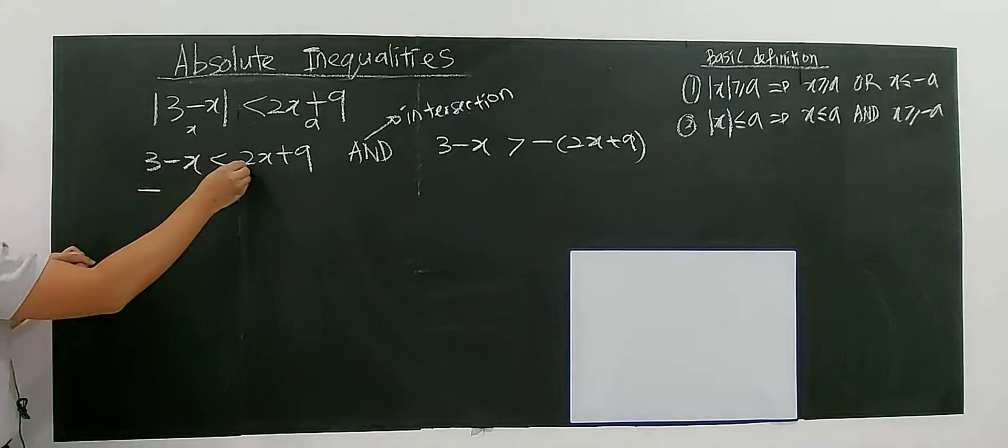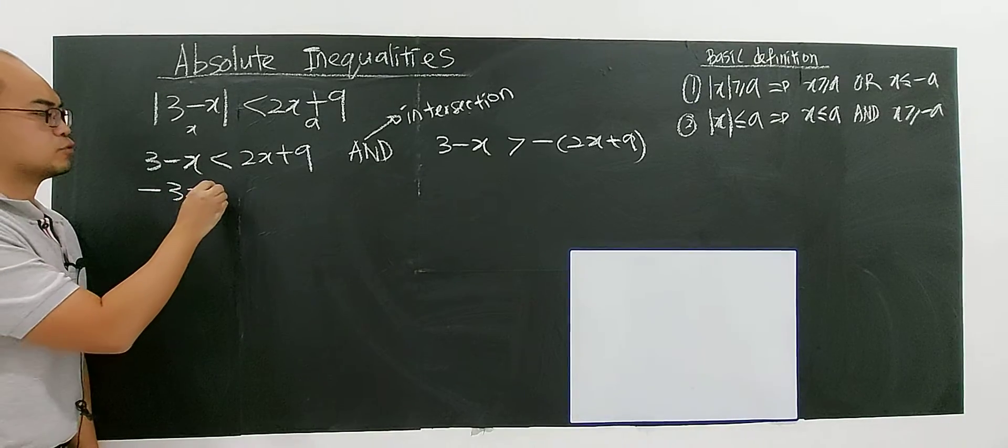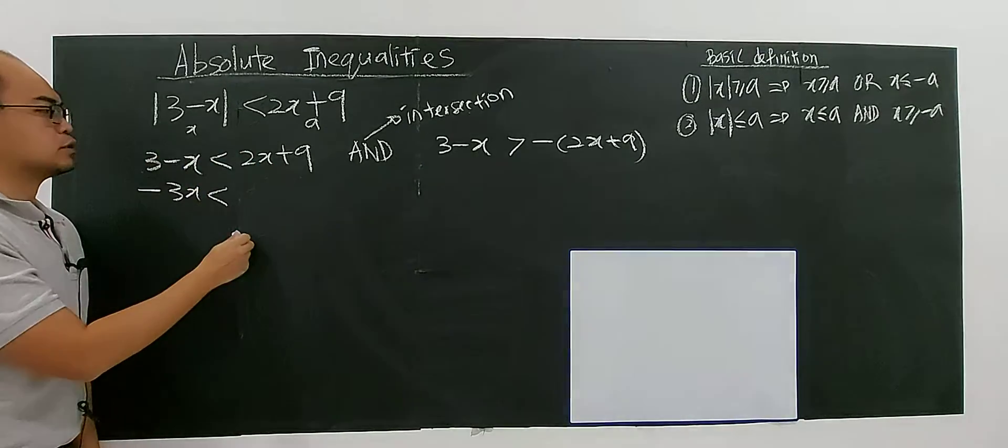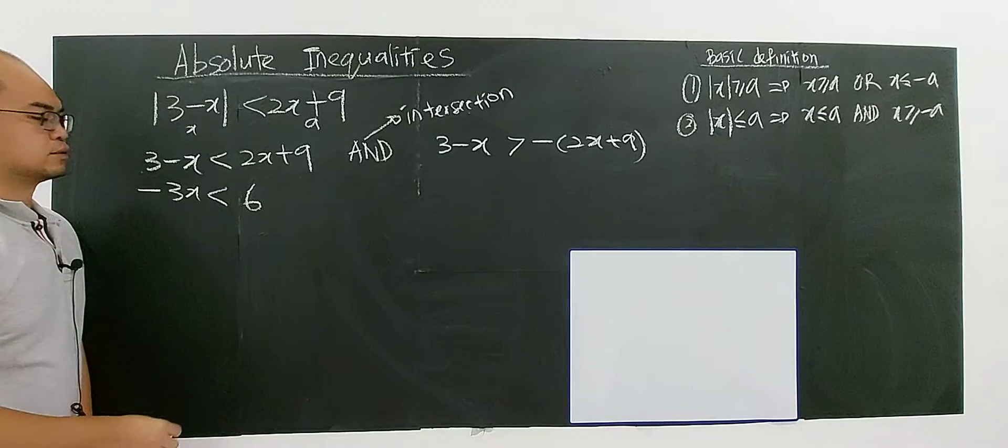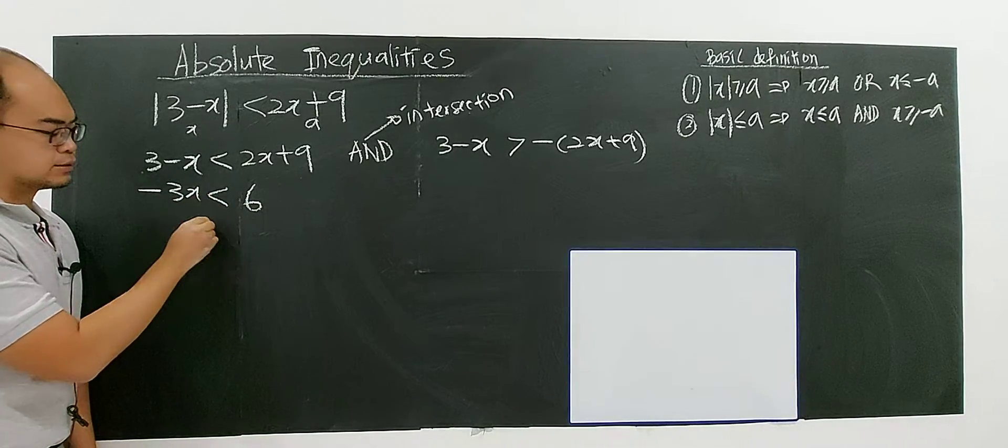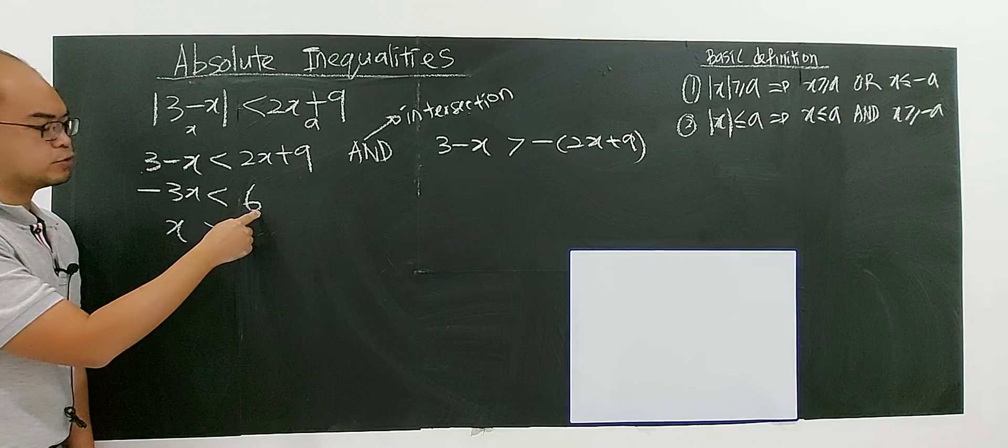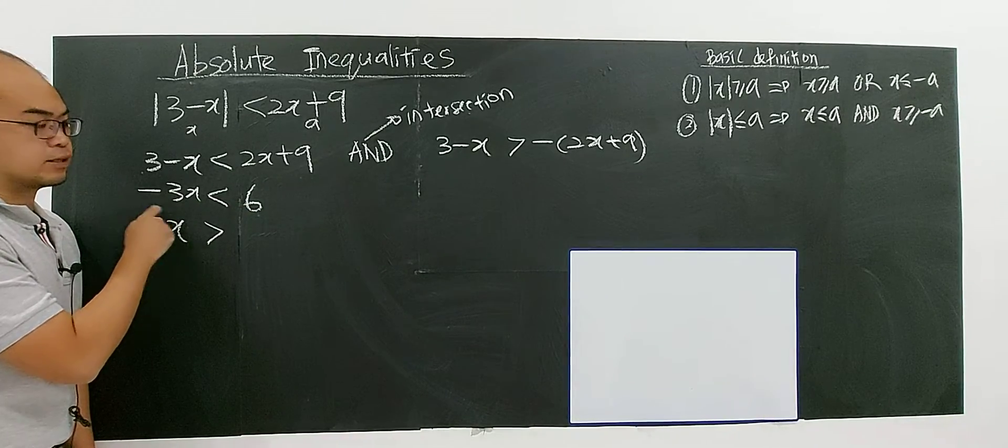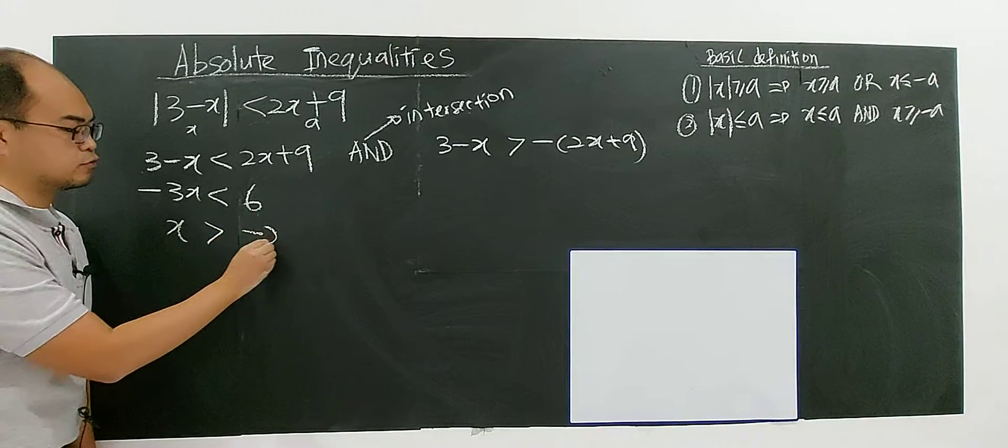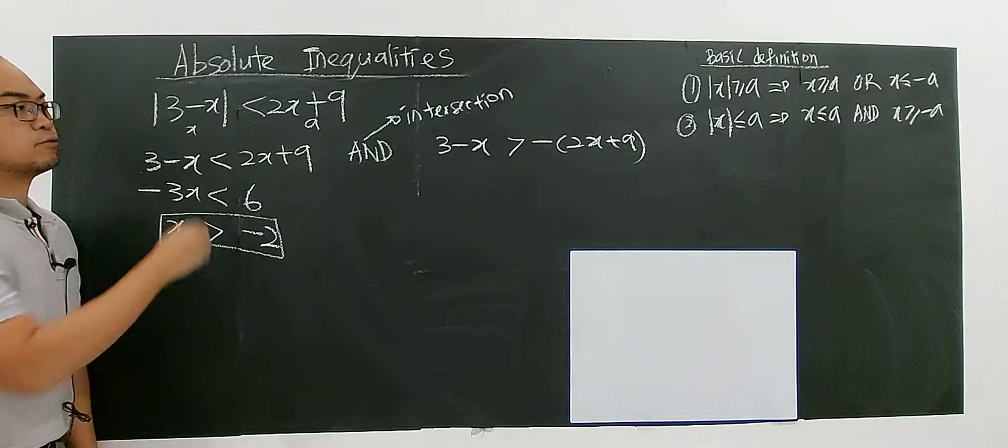Then you have negative 3x, right? Negative x, negative x, negative 3x. 9 minus 3, you have 6. So if you divide both sides by negative, the sign you must change. Don't forget. You have x divided by negative 3 because there is a negative. So 6 divided by negative 3, you have negative 2. This will be the solution for the first case.